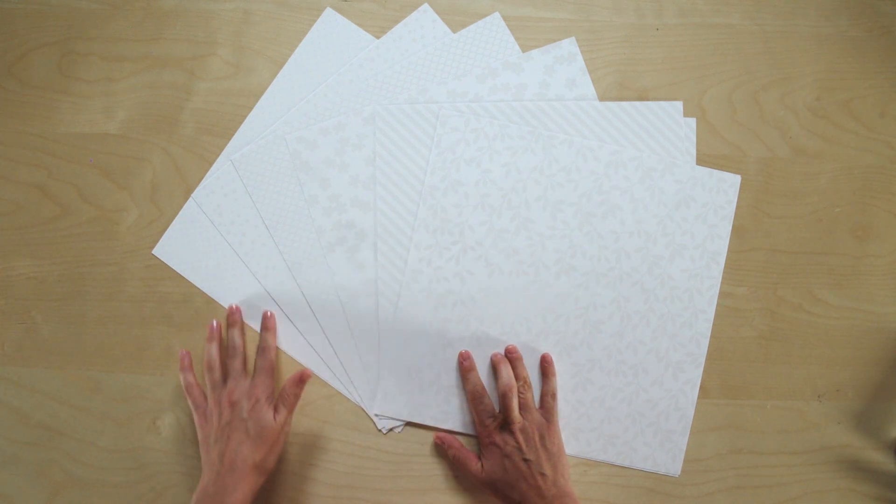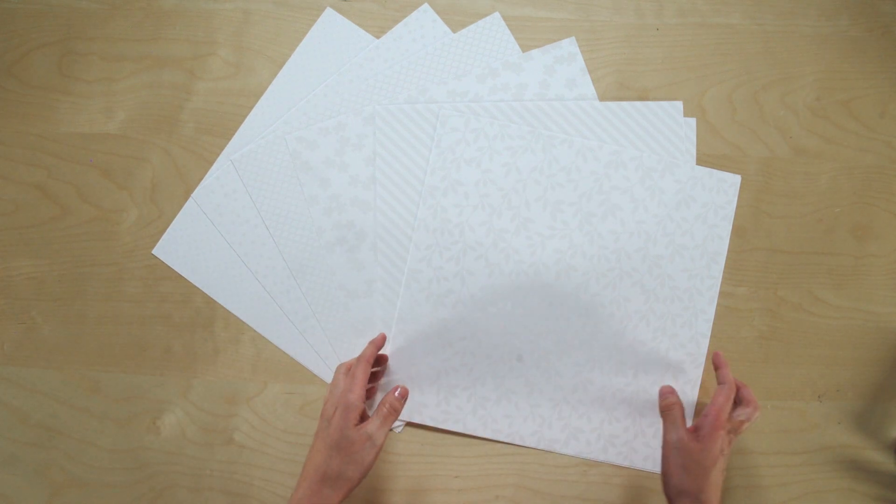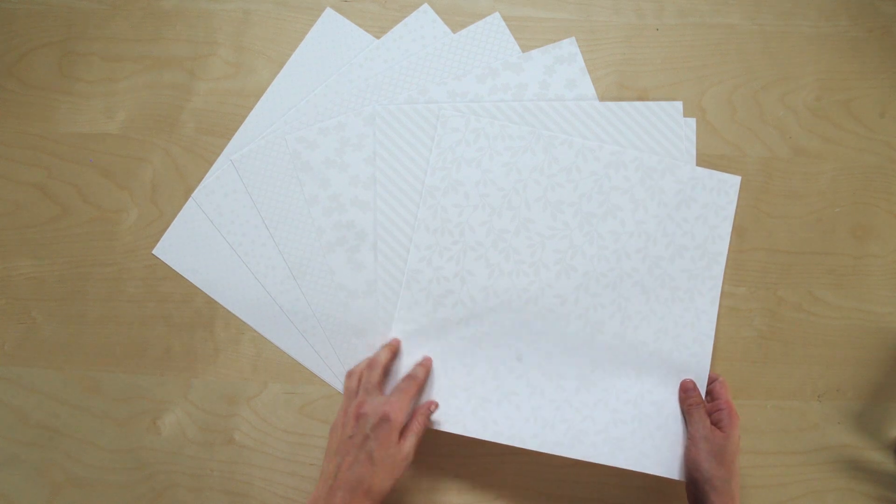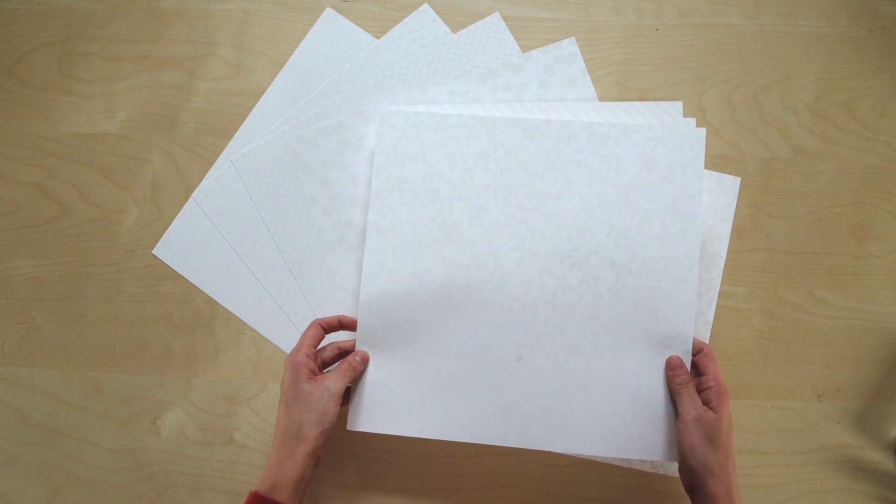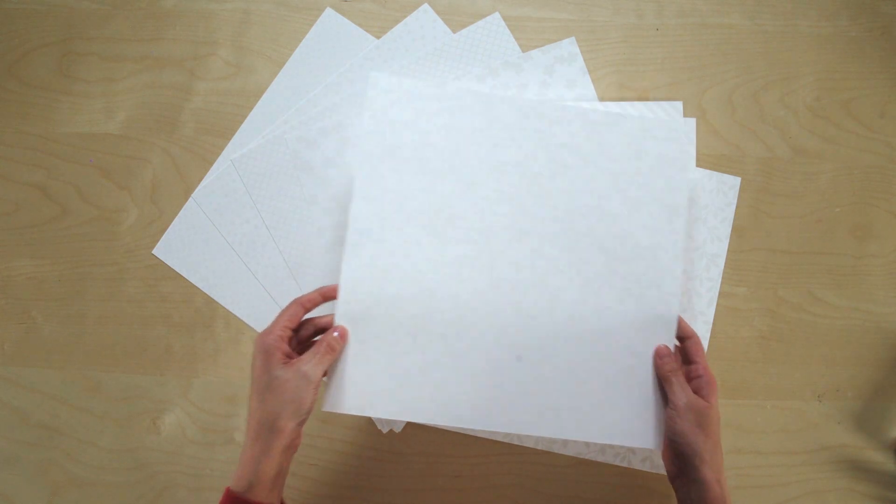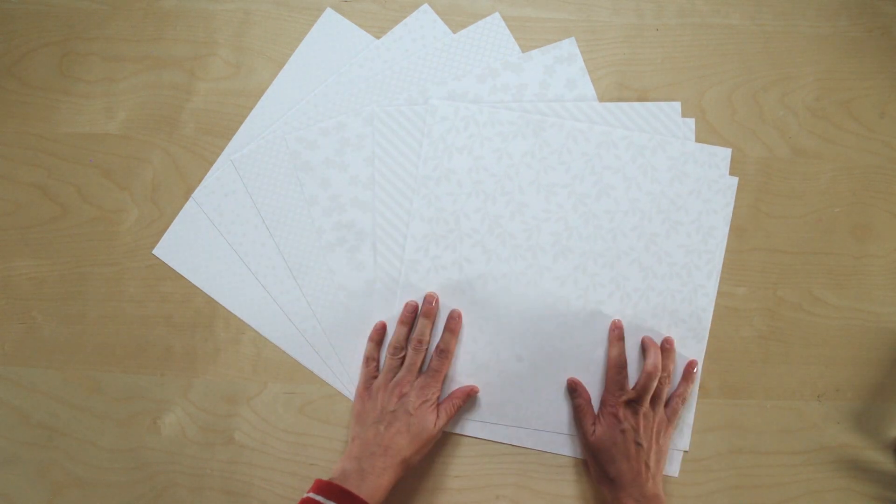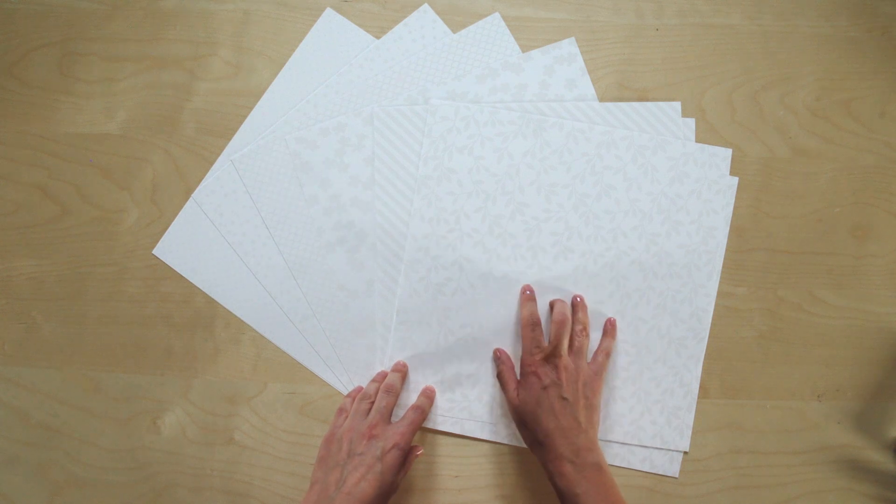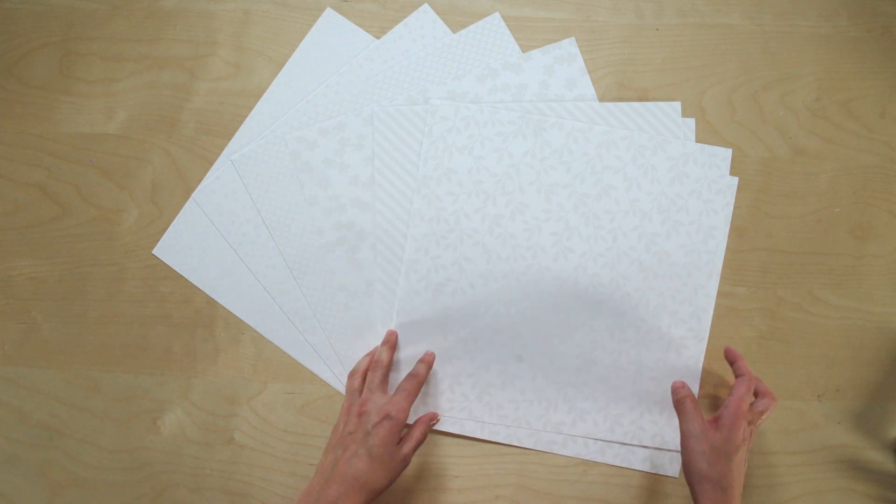Irresistibly Yours has six different designs, and you get two pages of each design. The paper has a white base with a glossy white design, and when you add color to it, the design is going to resist the color and then reveal that pattern.